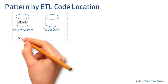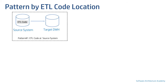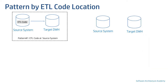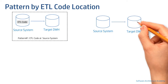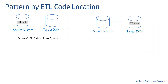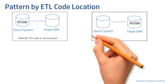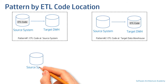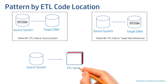Our next pattern is where the ETL code resides in the destination or target data warehouse. A pull mechanism is usually used by the data warehouse to connect to the source system and obtain data. Usually a database connection is established by the ETL tool or package.